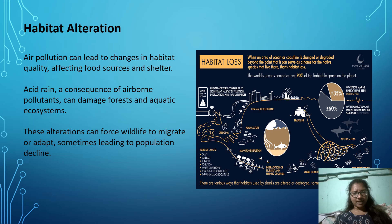Habitat alteration: air pollution can lead to changes in habitat quality, affecting food sources and shelters. Air pollutants can damage forests and aquatic ecosystems. These alterations can force wildlife to migrate or adapt, sometimes leading to population decline.